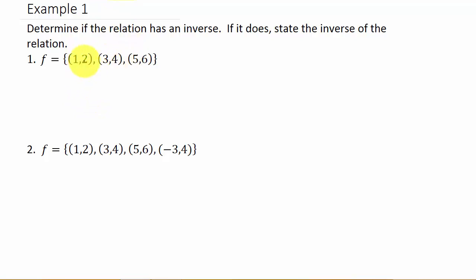So how do we determine if a relation is one to one? Well, you cannot have the same y value with two different x values. If you have the same y coordinate with two different x coordinates, then that means the relation is not one to one, and so that means it does not have an inverse.